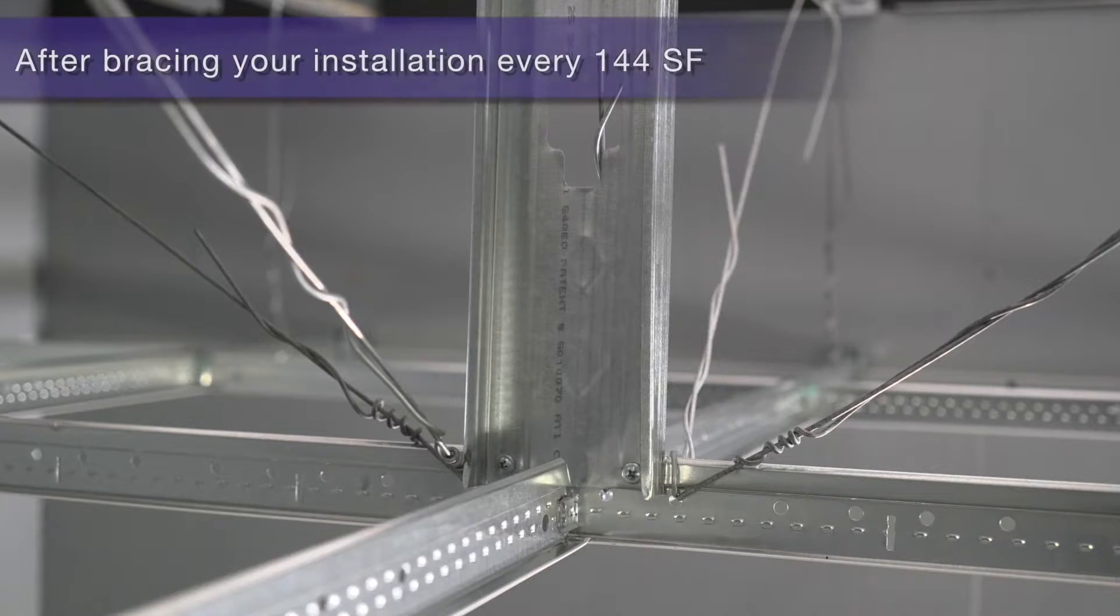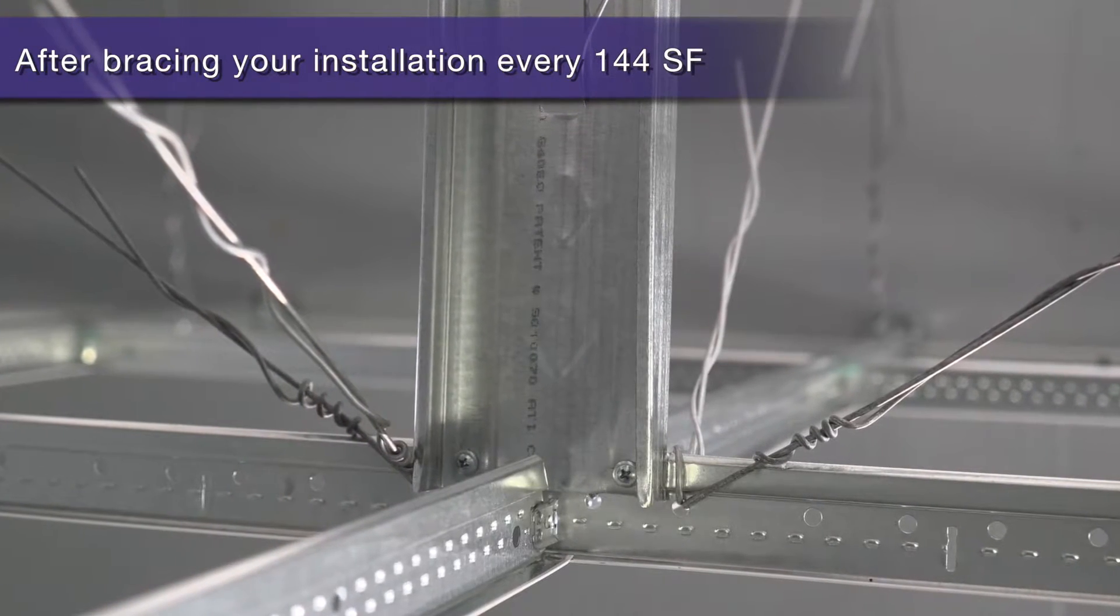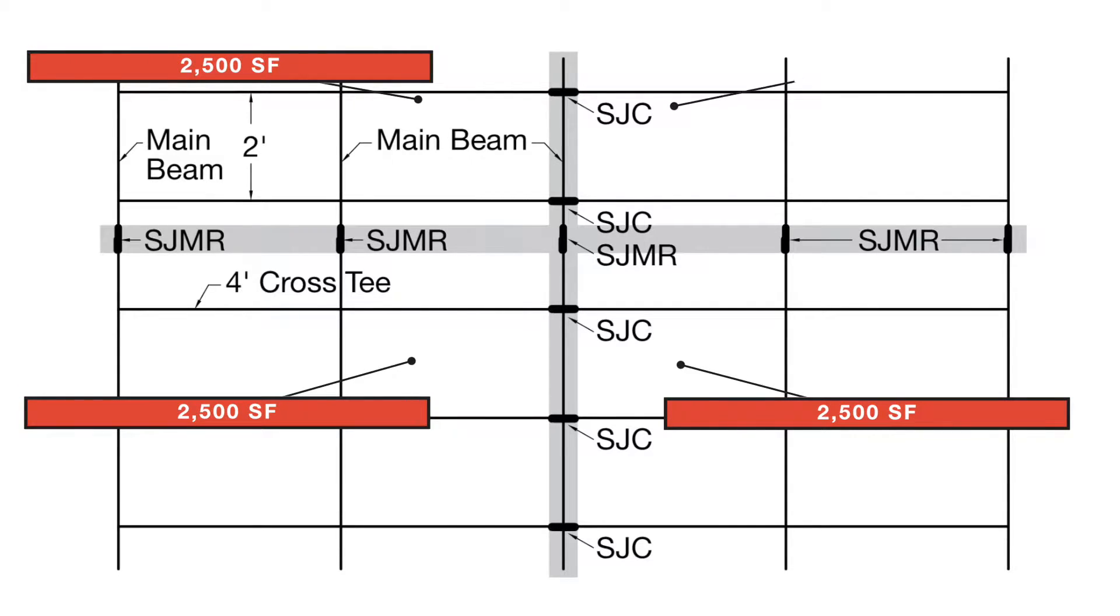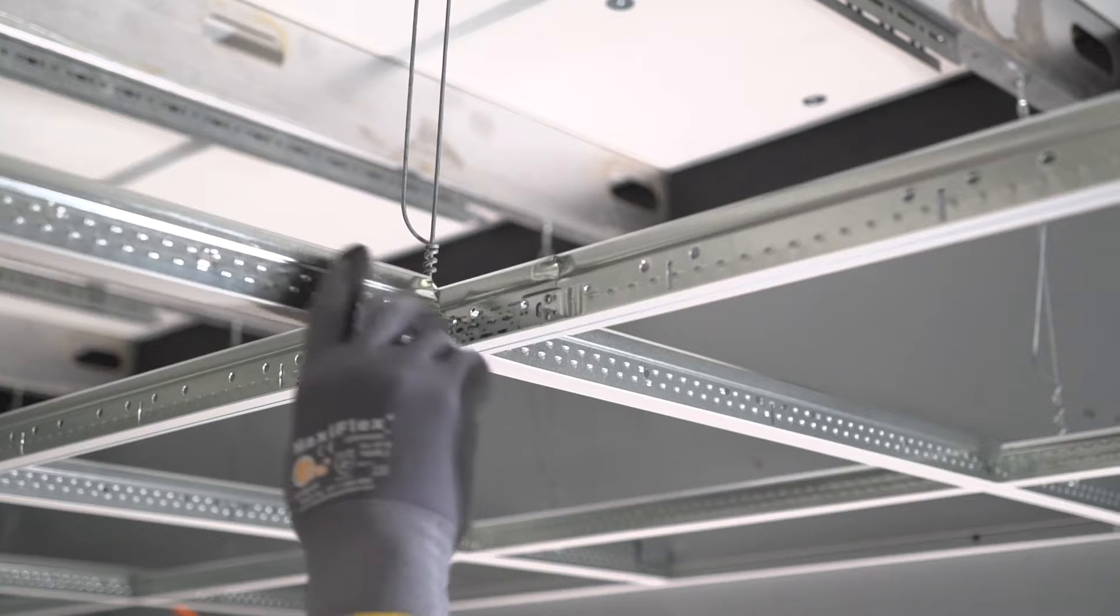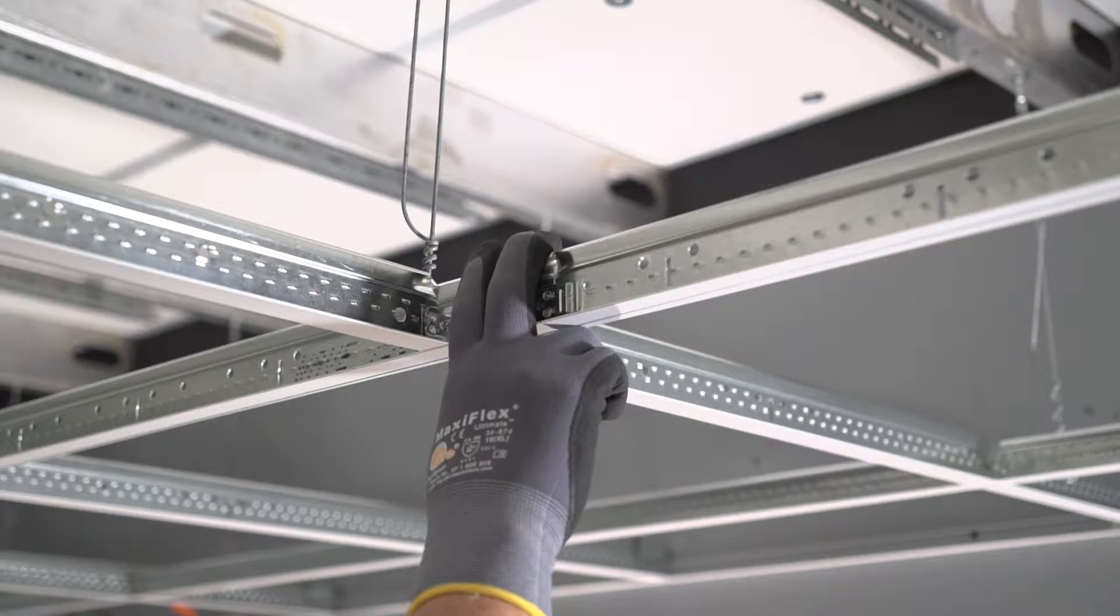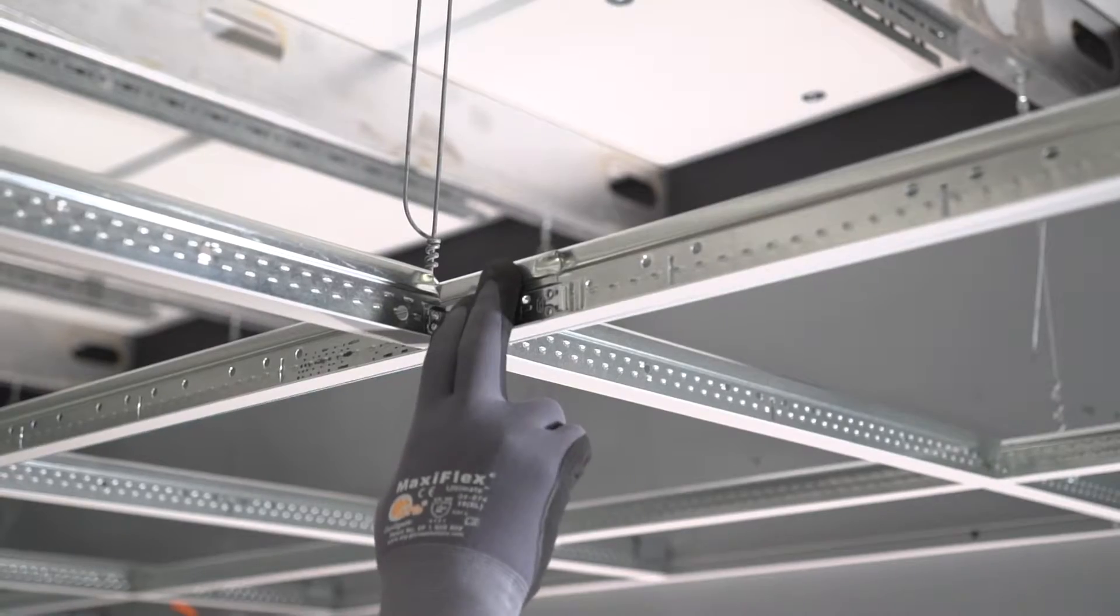After seismically bracing your grid every 144 square feet, if your installation is in a large open area, you will need to install seismic separation joints every 2,500 square feet per code requirements. Seismic RX separation joints make this installation process faster, easier, and better than traditional separation joint construction.